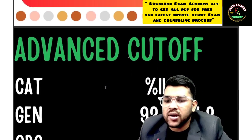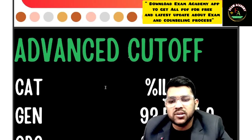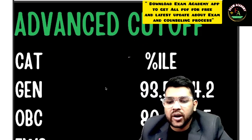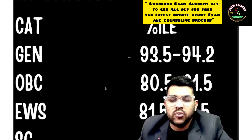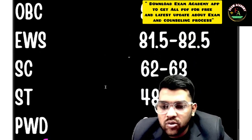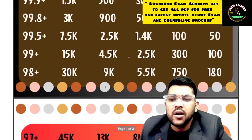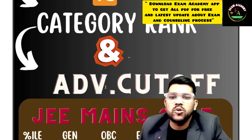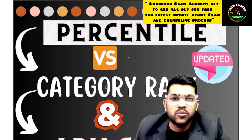Now for JEE Advanced cutoff category-wise — the number of aspirants has increased a little this year so cutoffs will also increase slightly. General: 93.5 to 94.2, OBC: 80.5 to 81.5, EWS: 81.5 to 82.5, SC: 62 to 63, ST: 48 to 49, PWD: 0.011 (you just need to appear at the center to qualify). This was the complete information regarding percentile versus category rank for General, OBC, EWS, SC, ST, and JEE Advanced cutoffs for all categories. Thank you.